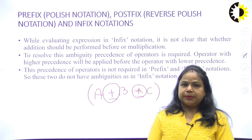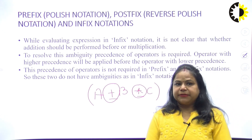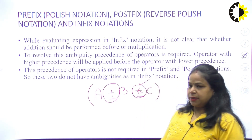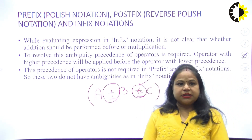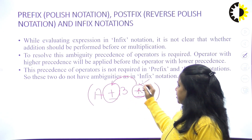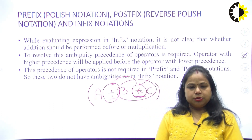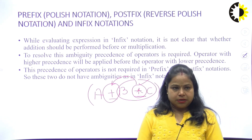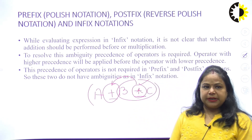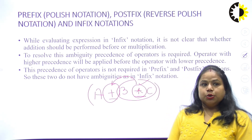This creates ambiguity — we are not clear whether to solve plus first or asterisk first. To resolve this ambiguity, precedence of operators is required. Operators with higher precedence are applied before operators with lower precedence. For example, asterisk has higher priority than plus, so in 'A + B * C', we first evaluate B * C, then add A to the result.